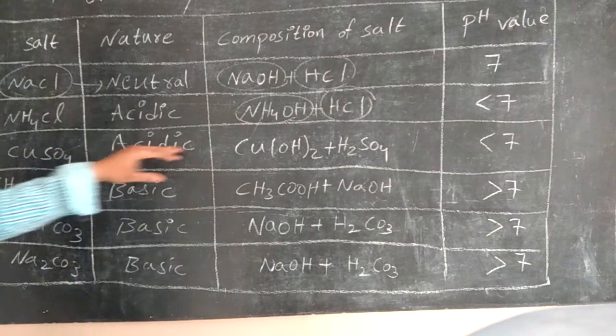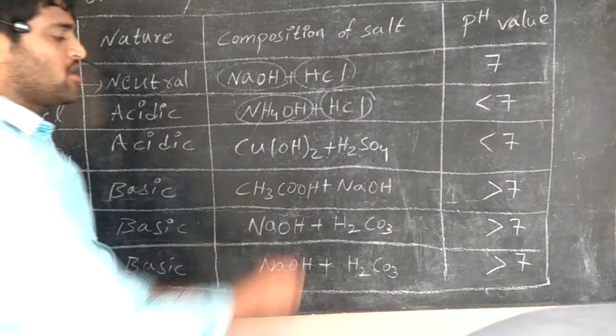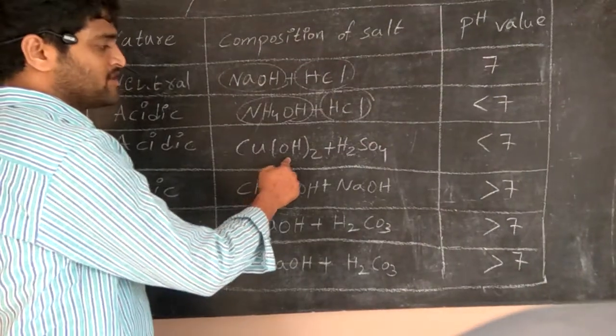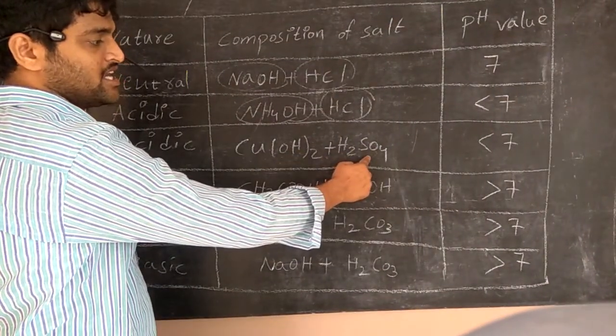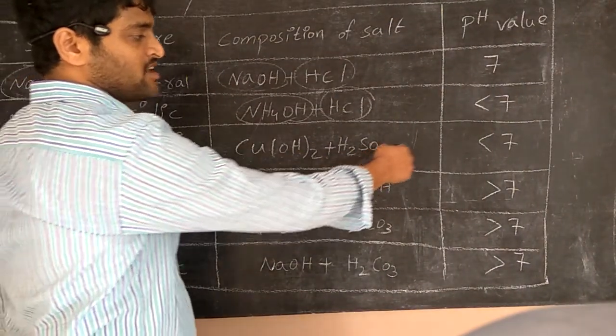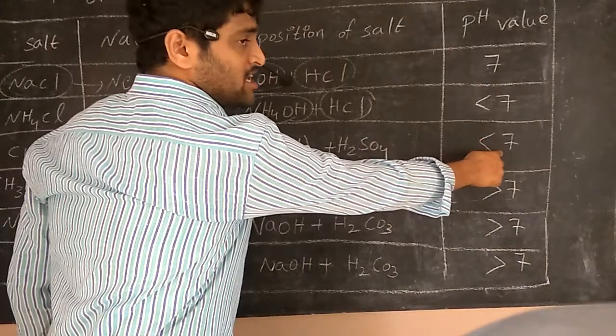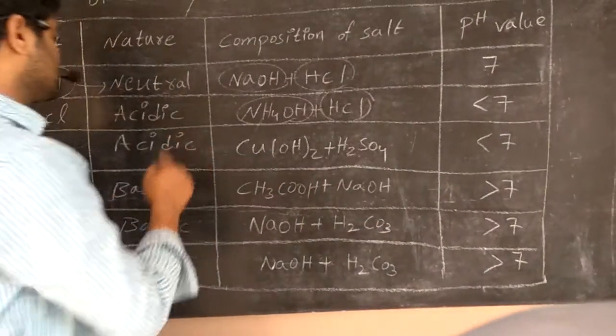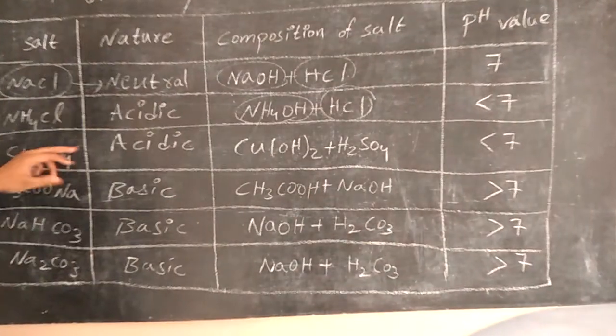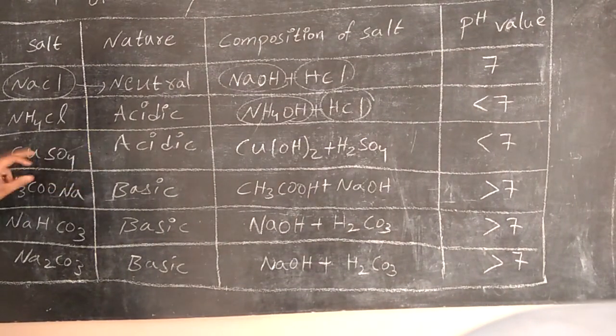The next one is CoSO4, which is also an acidic salt, because it is the combination of a weak base and a strong acid, H2SO4. The resultant pH value is less than 7, that's why it is an acidic salt.